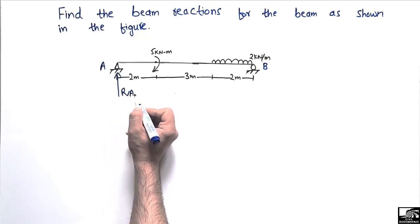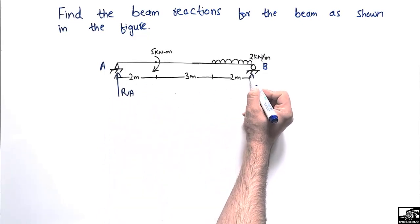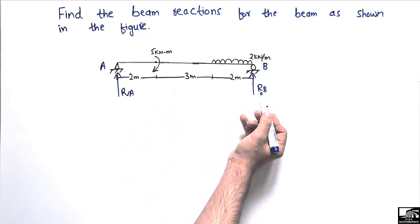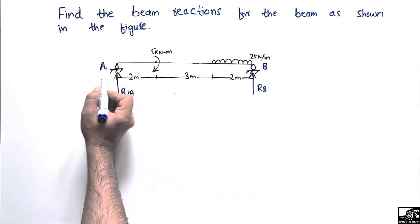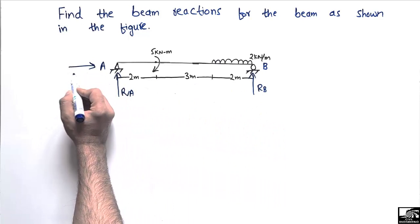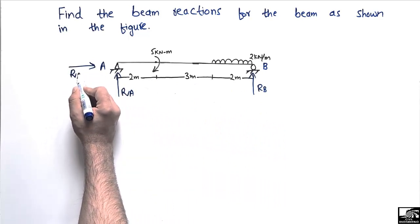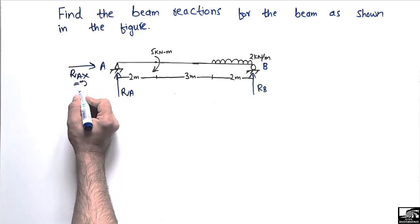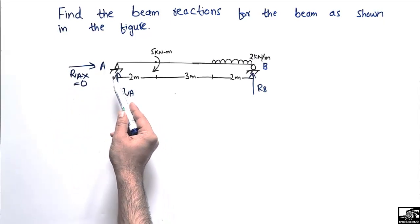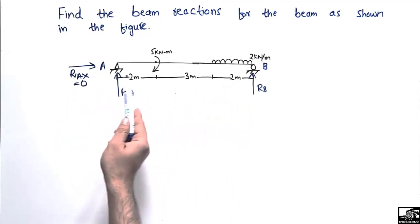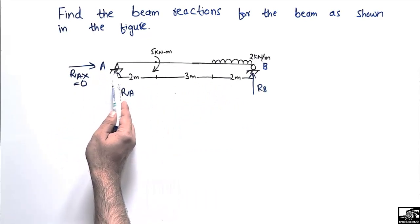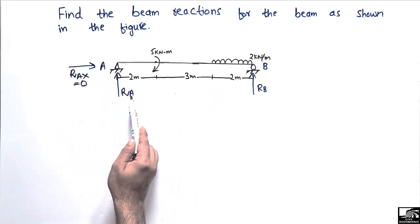To find the support reactions, let's call this support reaction A and this support reaction B. They will be represented by RA and RB, providing vertical resistance to the load. The hinge support can also resist horizontal load RAX, but here that component equals zero because there is no horizontal load acting on this beam.